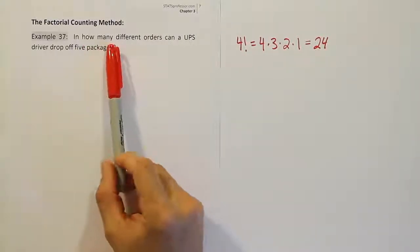To apply the fundamental counting rule to a counting problem, you have to break up the process into a set of steps. So in this problem, the UPS driver has to deliver 5 packages. So let's think about that. If you had 5 packages, let's say packages A, B, C, D, and E, those are your packages that you have to deliver.